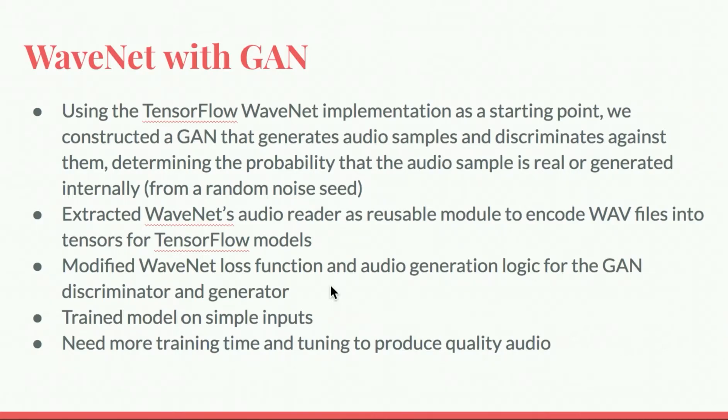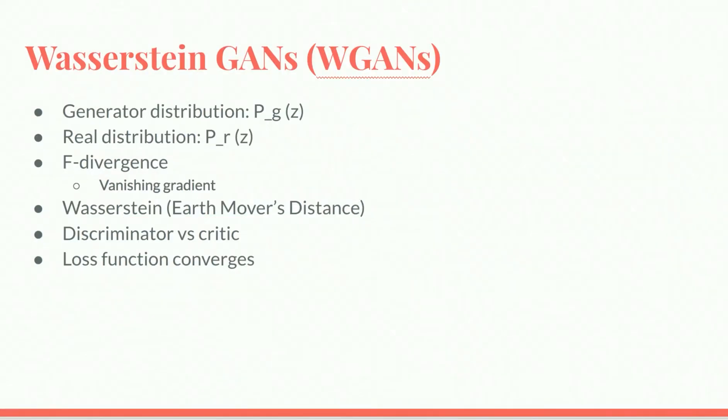For future work, we could use the WaveNet modules in various flavors of GANs and neural networks. One of the drawbacks of standard GANs is that training them is a very fickle process. Wasserstein GANs are a variation on standard GANs that help to eliminate the problem. The goal of the GAN is to minimize the difference between the distribution of the generator's output and that of the real data.